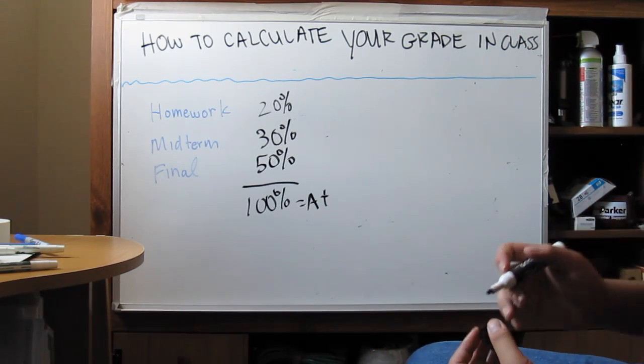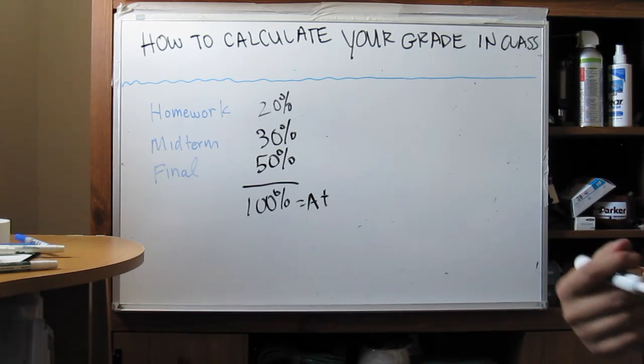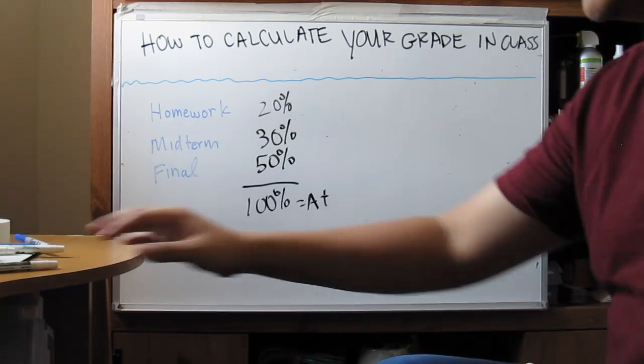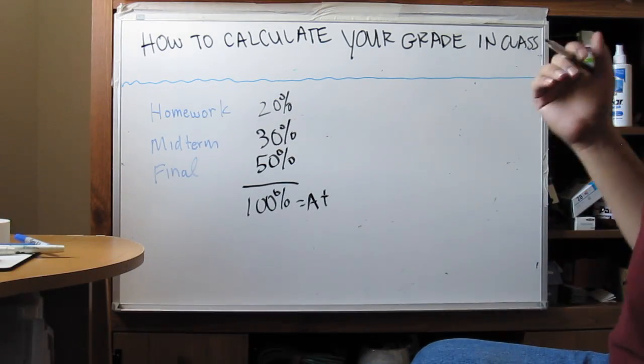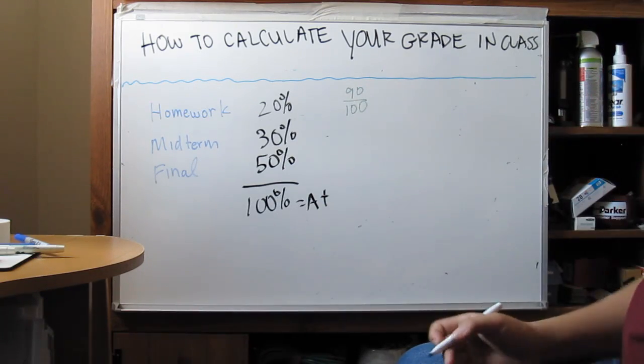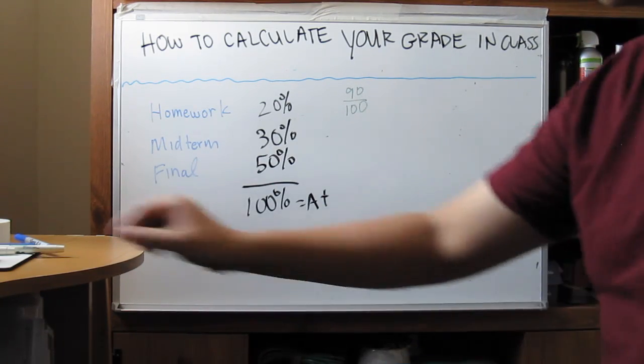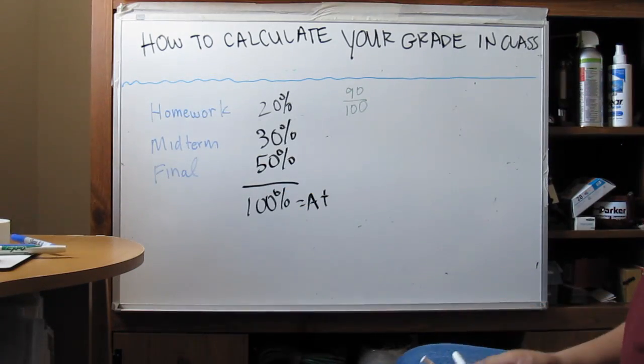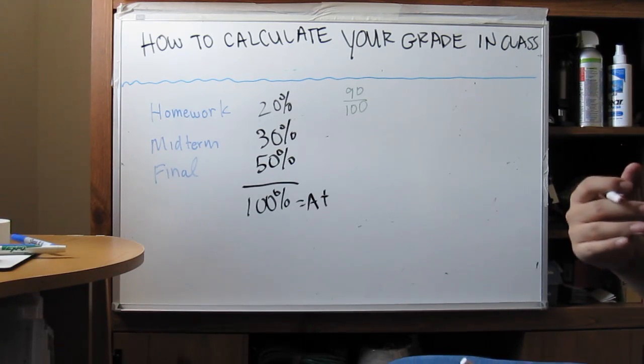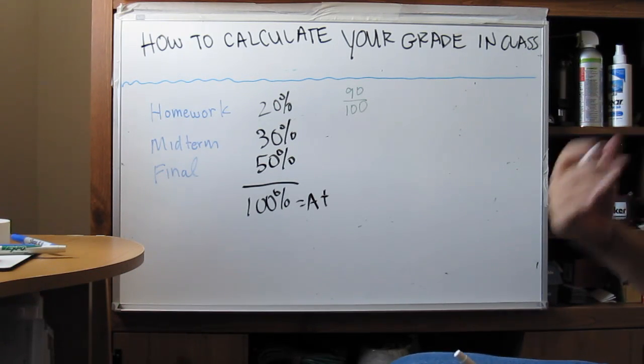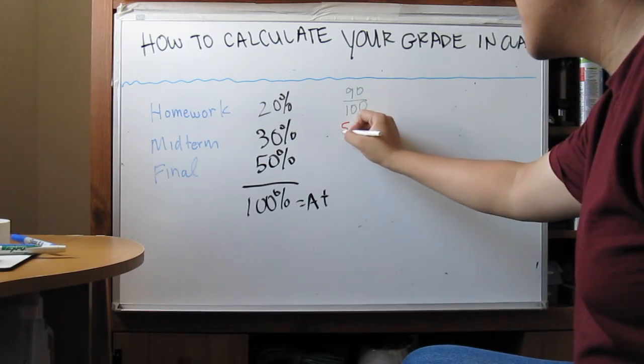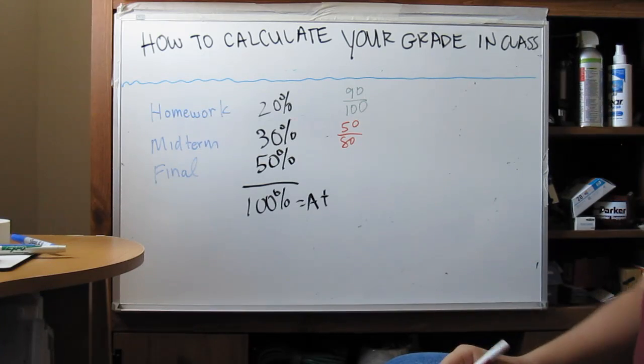Now, the next step is to figure out how many points you're getting per each component. Let's assume that you've been doing really well so far, and that you happen to get 90 out of 100 on your homework. And at this point you're thinking, great, I'm doing really well on my homework, I think I'm going to get an A in the class or an A-. And all of a sudden you get your midterm exam, and you find out that you got 50 out of 80 on your midterm exam.